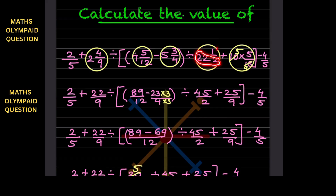Continuing the conversions: 22 and 1/2 becomes 44 plus 1, which is 45/2. You can see the working shown here. Also, for another mixed fraction, two nines and two fives give us 25/9. Now we have adjusted all the mixed fractions to improper fractions and we are ready to work on the brackets.